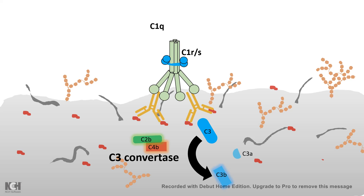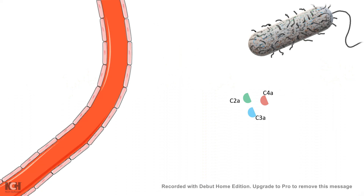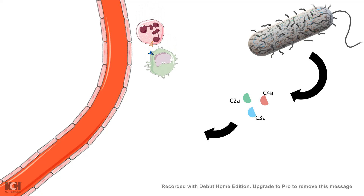Complement proteins like C3A, C2A, and C4A are potent anaphylotoxins, meaning they can be secreted from the bacteria and travel to nearby blood vessels, mobilizing neutrophils and macrophages to the site of bacterial infection. These neutrophils and macrophages quickly recognize the harmful bacteria because they have Fc receptors which can bind to the antibodies coating the bacteria.